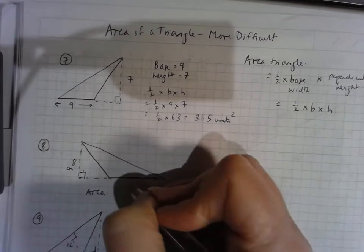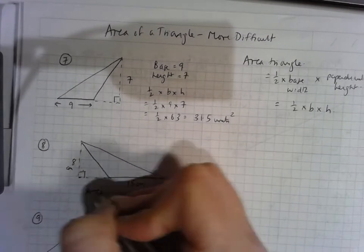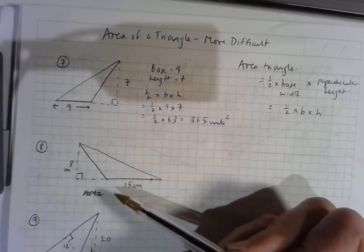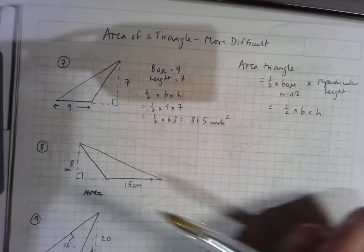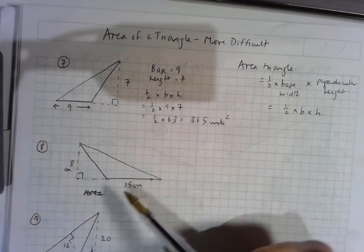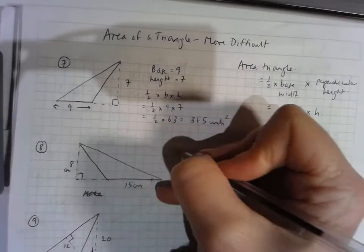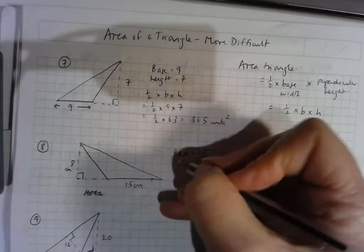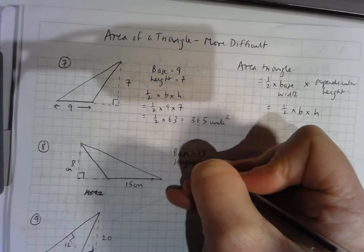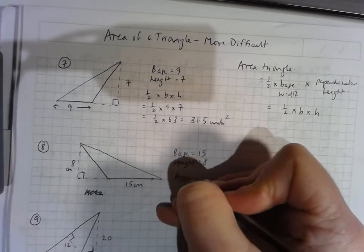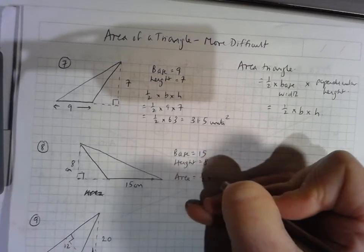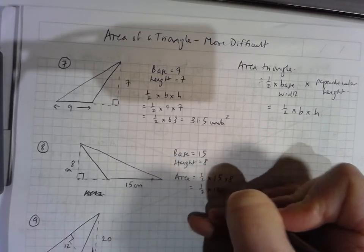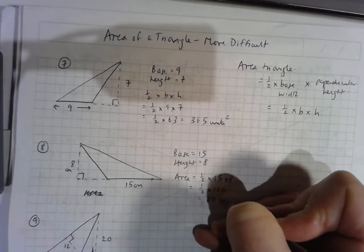We're told that this is 15 centimeters. Okay, so here's another one. Again, it's a triangle. It's not a right angle triangle, though this angle is bigger than 90. What we're told though is that the base is 15. And again, the perpendicular height is having to be drawn outside the triangle. So the height is equal to 8. So the area of that triangle is a half by 15 by 8, which is a half by 120, which is 60. In this case, centimeters squared.